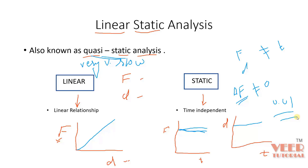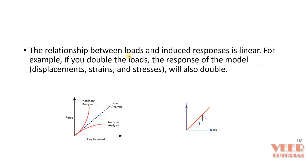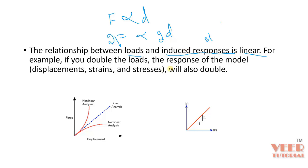Now let's understand this concept in depth. The relationship between load and the induced response — which is basically displacement D — is linear. For example, F is proportional to D, meaning if you double the value of force, you get double the displacement. This is called a linear relationship. When we plot stress versus strain and the curve is a straight line, this is linear. When the line is curved, it is nonlinear.